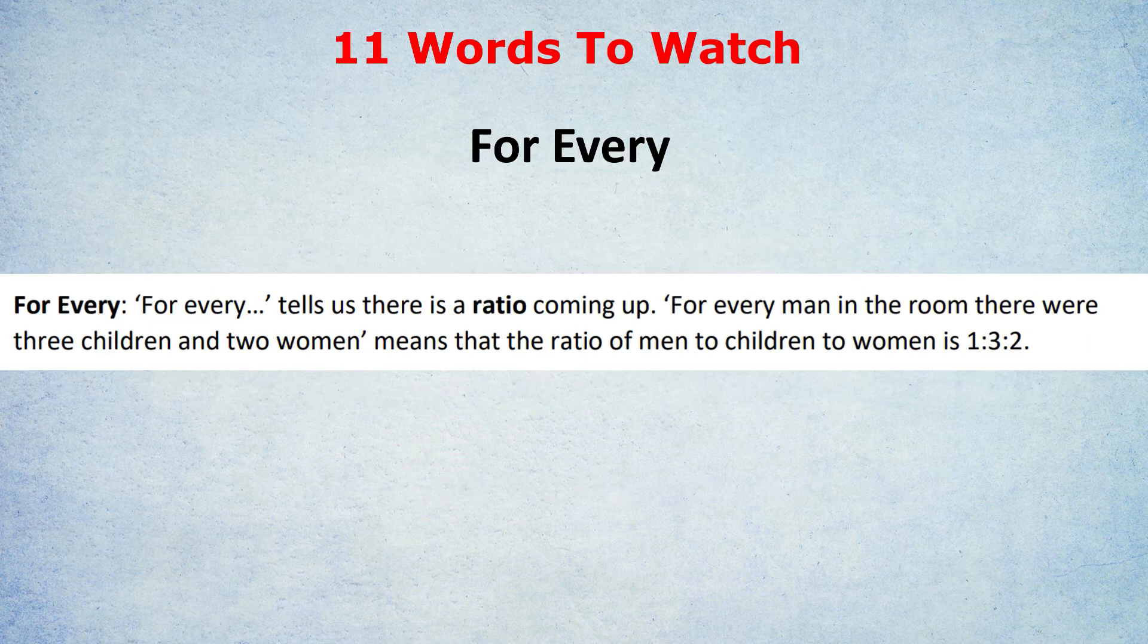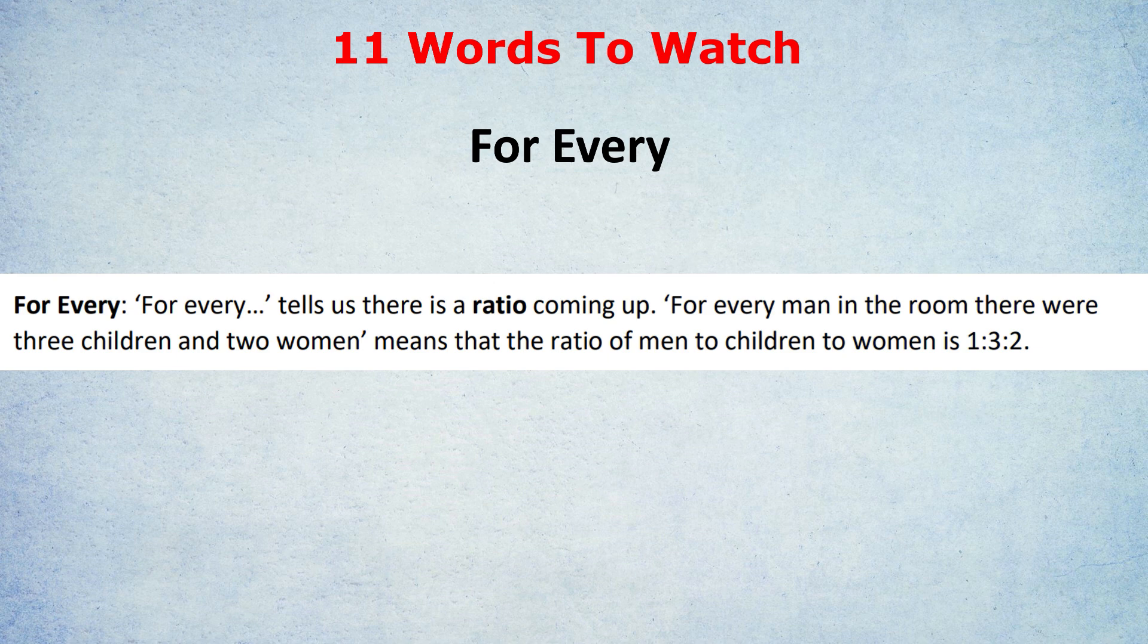Next, for every. I only include this because some people don't know that when you see the phrase for every, they're setting up a ratio. As in the example on screen. For every man in the room, there were three children and two women. That phrase for every is setting up a ratio. For every man, for every one man. So that's one in the ratio. There were three children. So that's three on the ratio, as you can see at the end of the sentence. And two women. So that's two in the ratio. And then you'd label that ratio. But this is just a quick way of realizing they're giving you a ratio when they use the phrase for every.